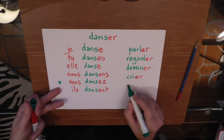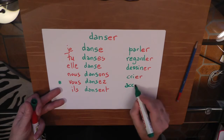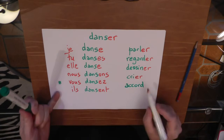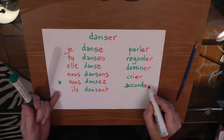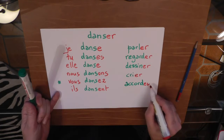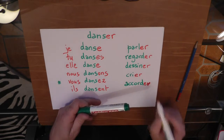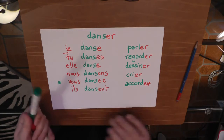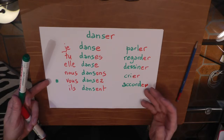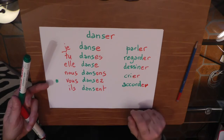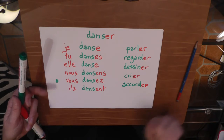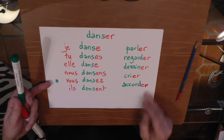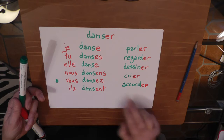Sticking with musical language, another verb could be 'accorder.' You still have this 'r' sound, but it's very common in French. 'Accorder' has a few meanings — one of them is to tune. For example, 'I'm tuning my guitar' is 'j'accorde ma guitare.'